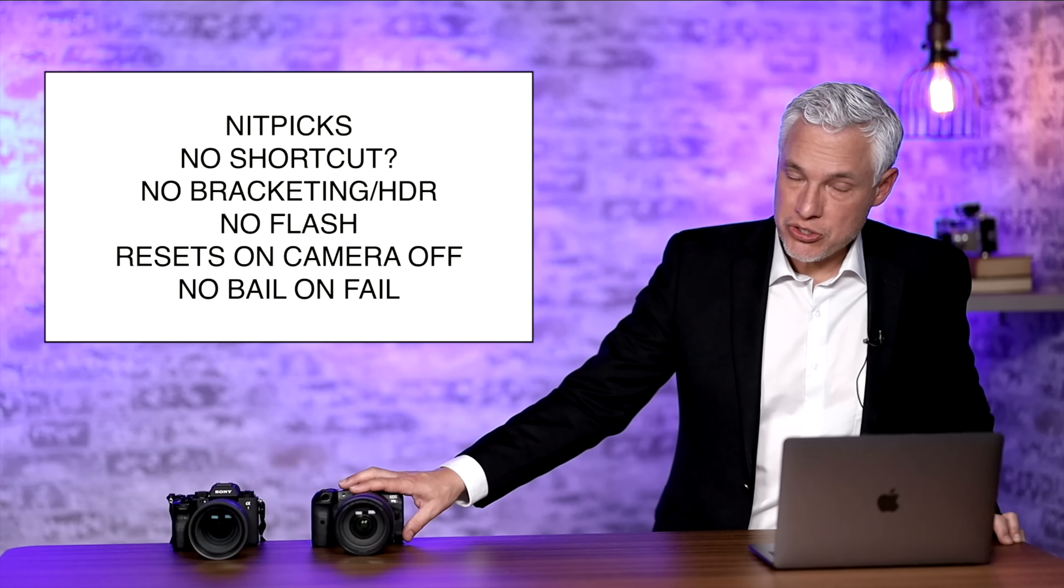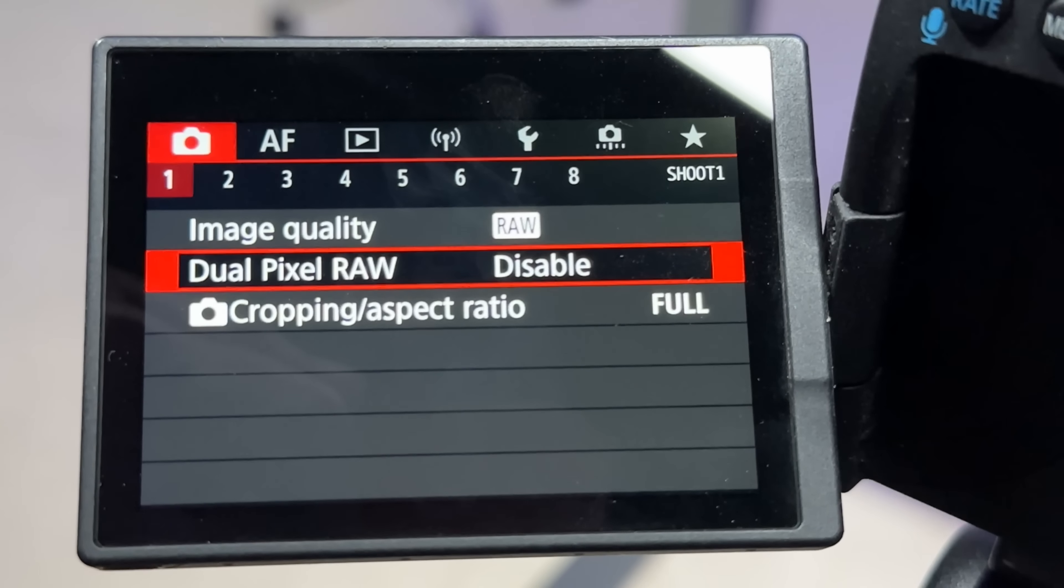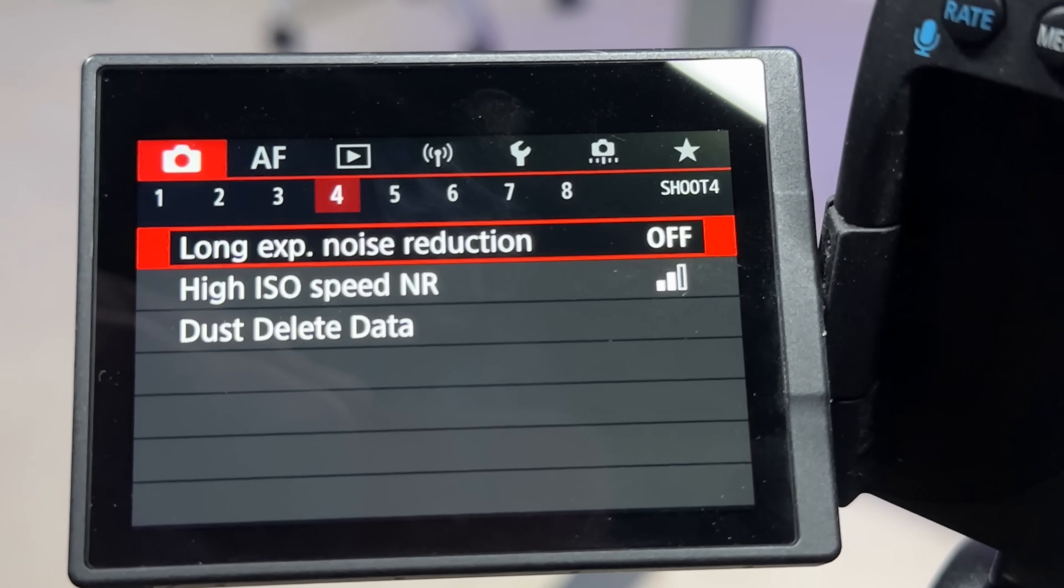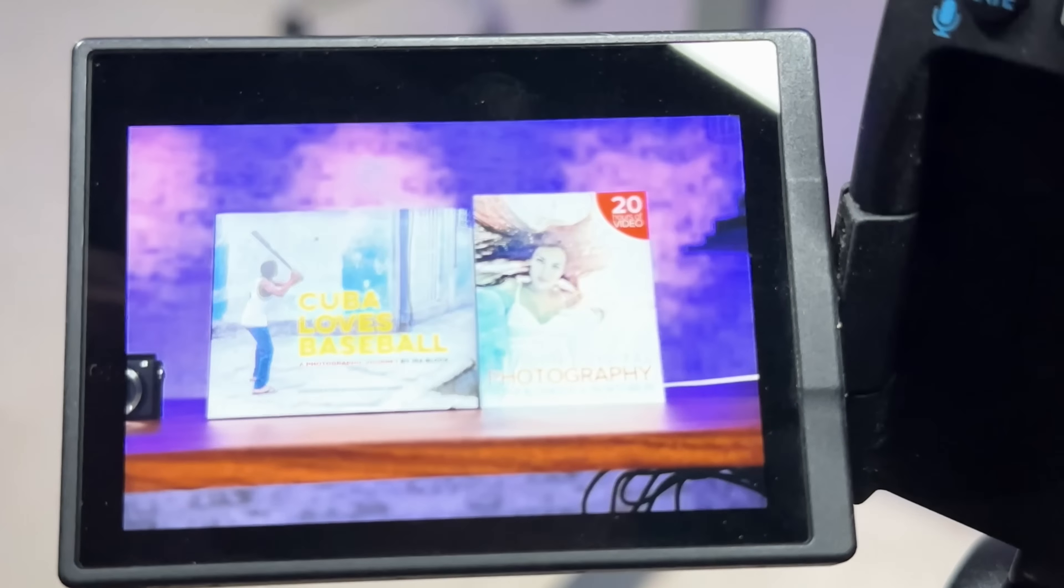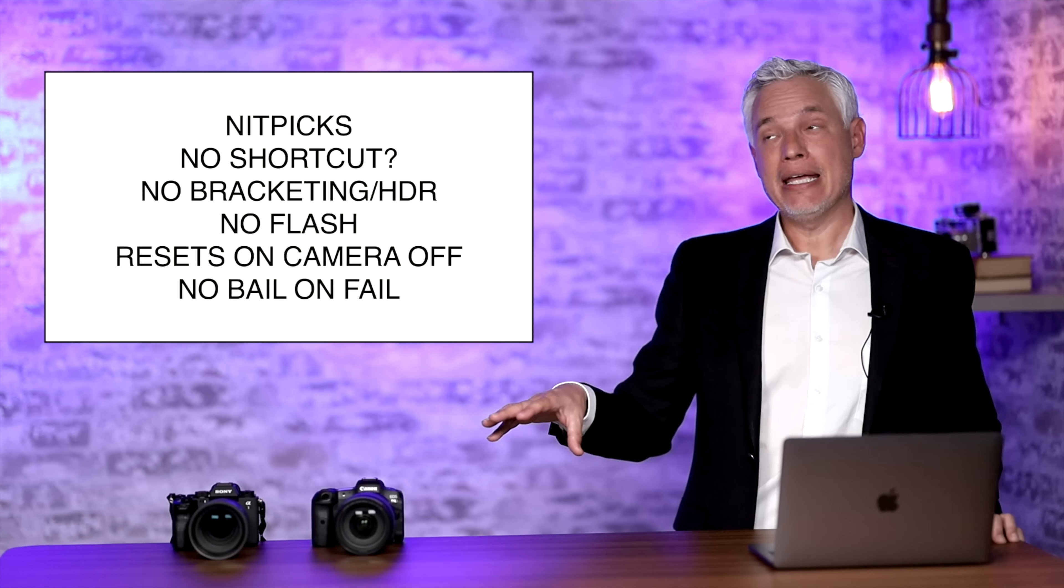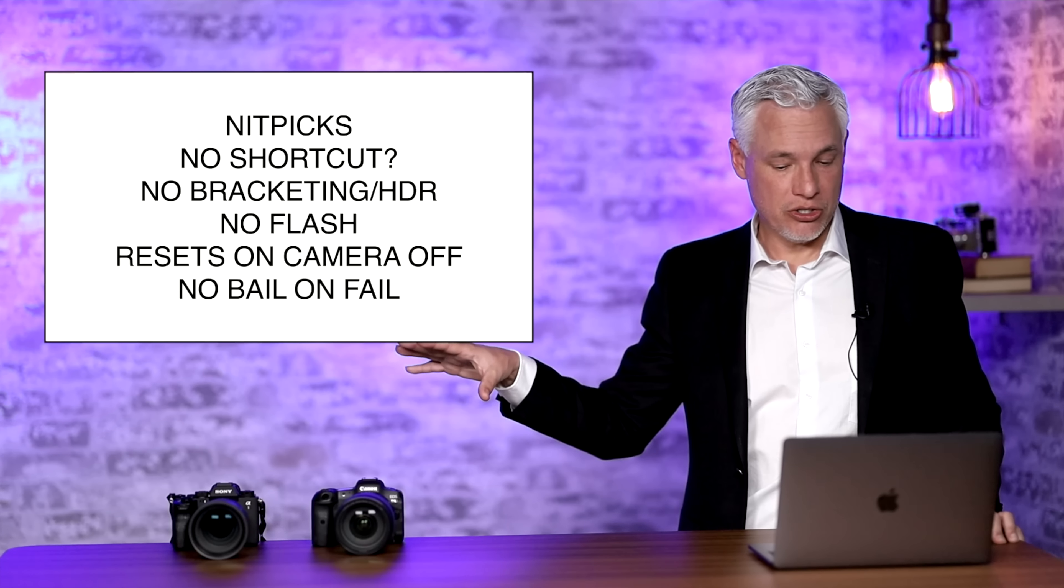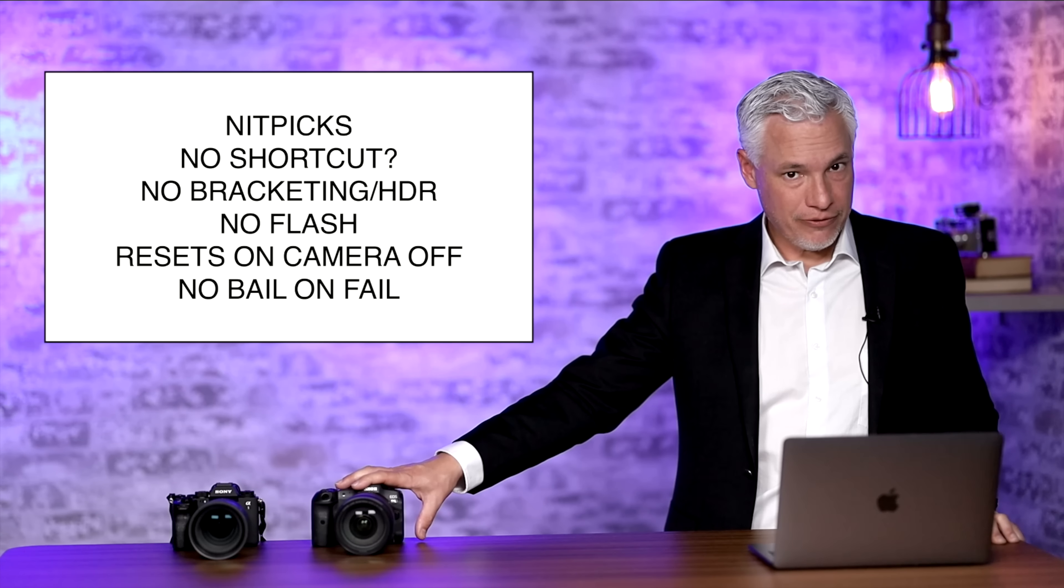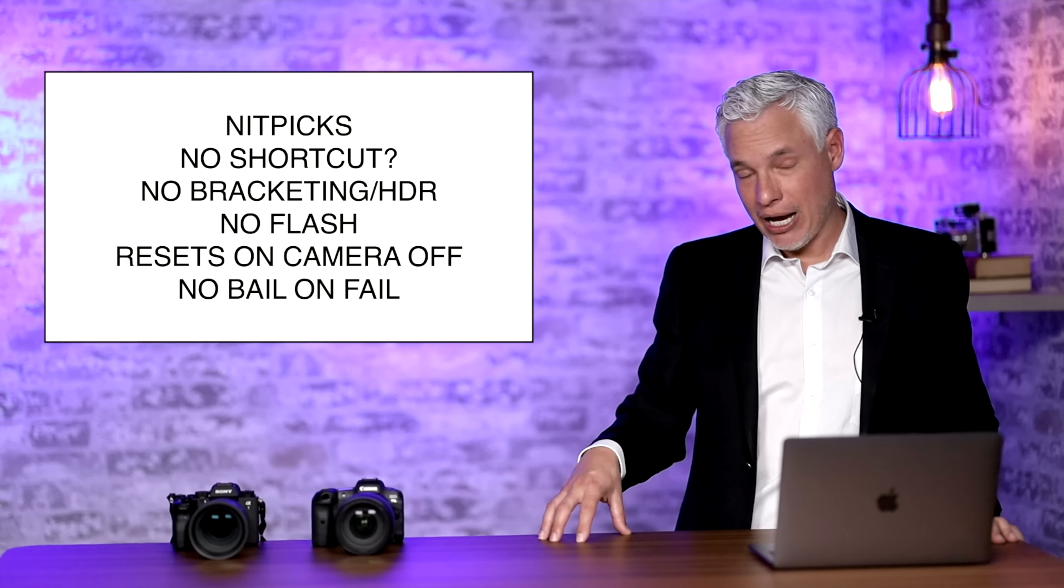For those of you who might be using the Canon R5 I want to share a few things I've learned. First there doesn't seem to be a way to create an easy shortcut for it. So you basically always have to go into the menu system camera on page 5. It does not support bracketing or HDR. It does not work with the flash which limits your ability in controlled environments to do like fine art reproductions. That's something that Sony can do. Every time you turn the camera off it turns off IBIS high-resolution mode so you have to go back into the menu to turn it back on.